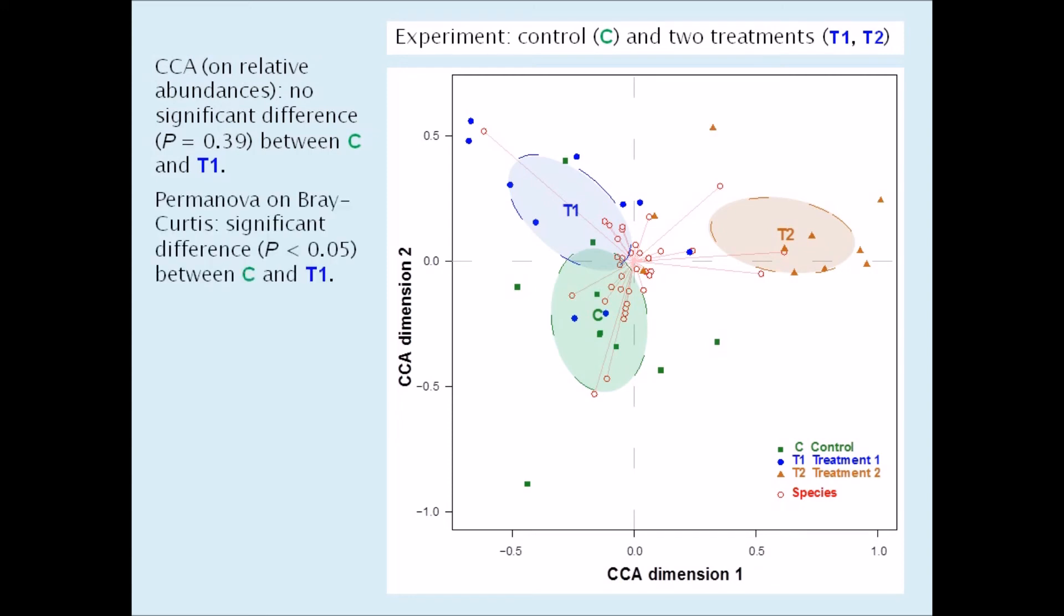On the other hand, the permanova, when Bray-Curtis is used, indicates a significant difference between C and T1. This is due to the fact that there are size differences between the samples. These box plots of the total abundances show that the treatment samples generally have lower abundance counts than the control samples. These size differences are also incorporated into the Bray-Curtis dissimilarity and contribute to the measured differences between the control and treatment samples.